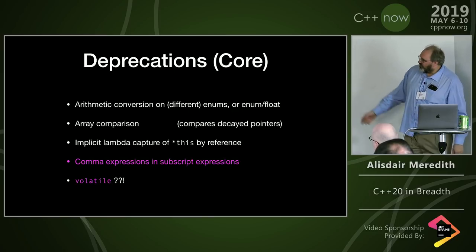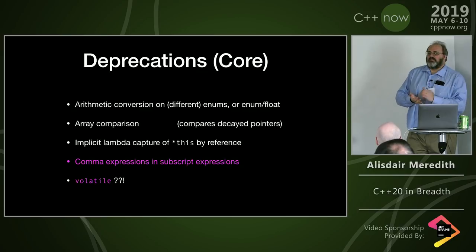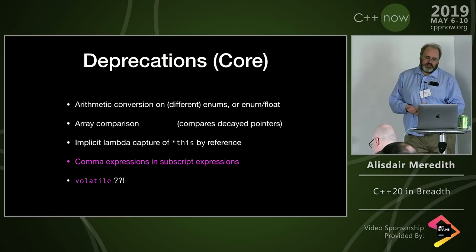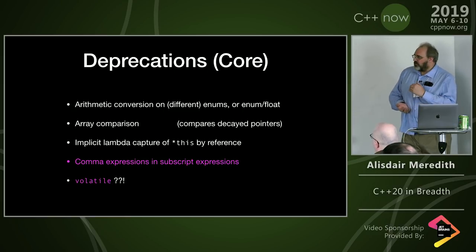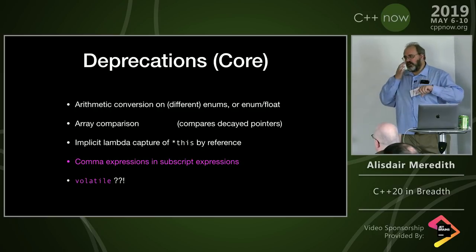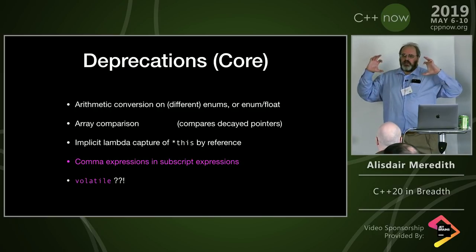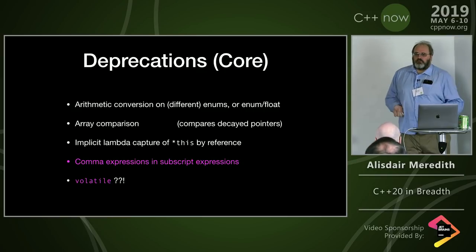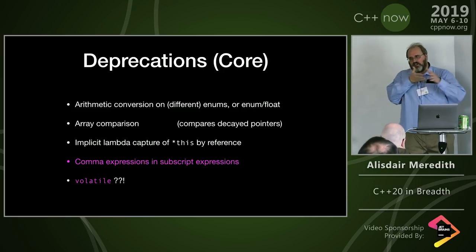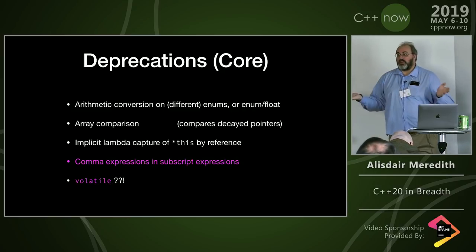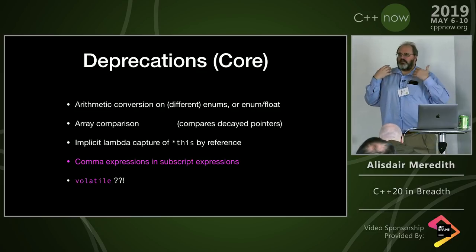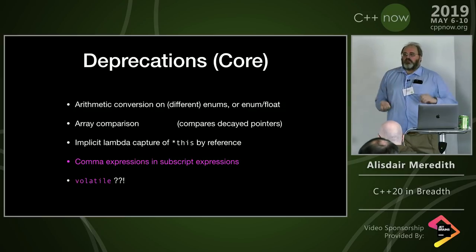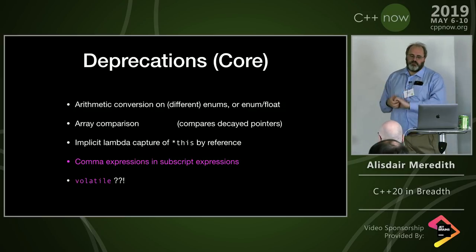Items shown in violet are things we hope to land at Cologne that haven't landed yet. One such feature: we're going to deprecate the use of comma expressions in subscript operations — square bracket operators. This opens up the possibility that in the future we might have multi-index array parameters. People often misread comma expressions in subscripts and don't realize what's happening, so deprecating it paves the way for a cleaner future.